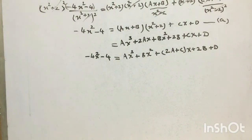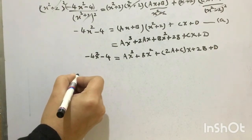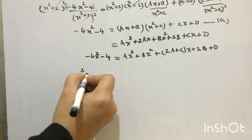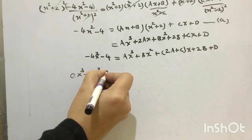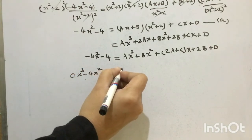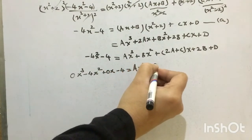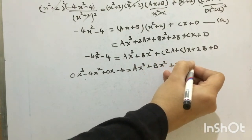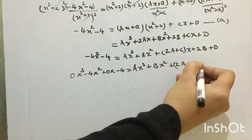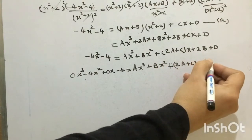Now writing the left-hand side in descending order, we get 0x cube minus 4x square plus 0x minus 4, is equal to ax cube plus bx square plus 2a plus c into x plus 2b plus d.